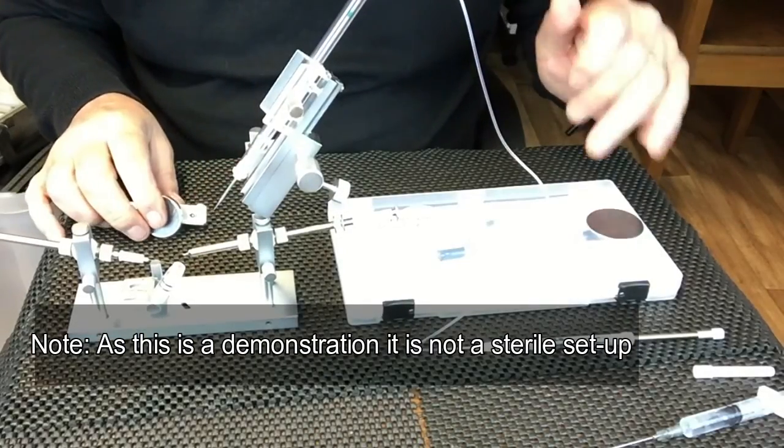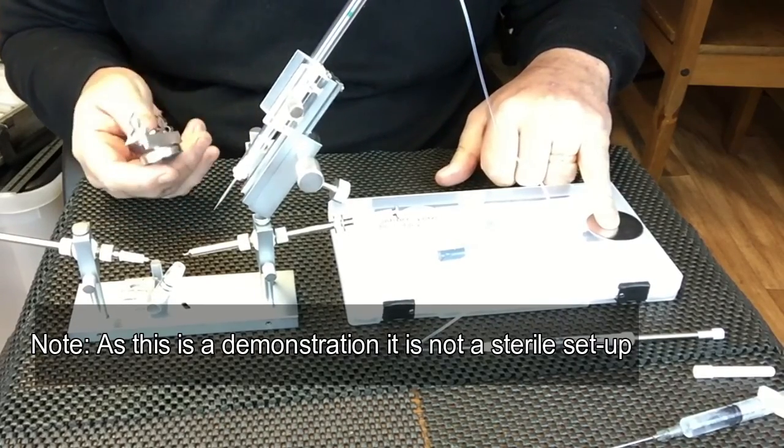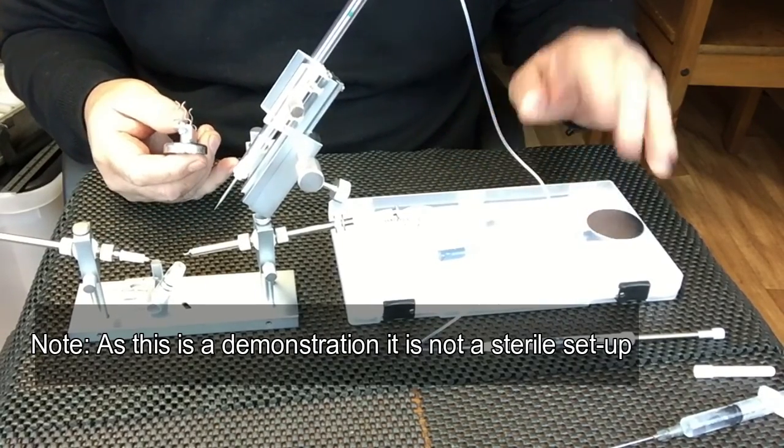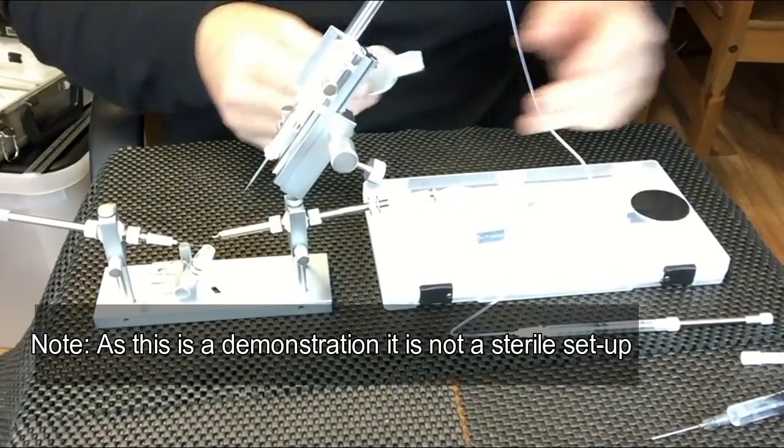You can, if you wish, fix the metal disc that came with your magnetic holder onto the actual box, or you can fix it to a piece of perspex or wood.